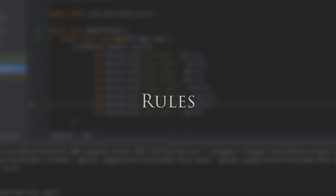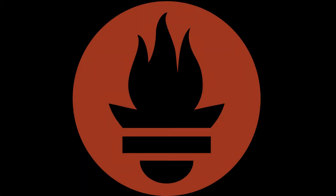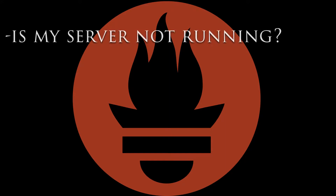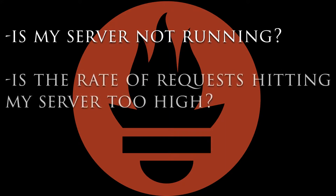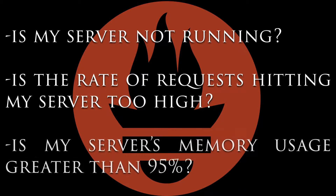In Alert Manager, you configure how you want to deal with an alert. Some alerts may be sufficient to send by email, but others may require a phone call to wake someone up in the middle of the night. Here are some example rules we might configure: Is my server not running? Is my rate of requests too high? Is my server's memory usage greater than 95%? A rule has a binary true or false answer, and once a rule is broken, an alert is raised.